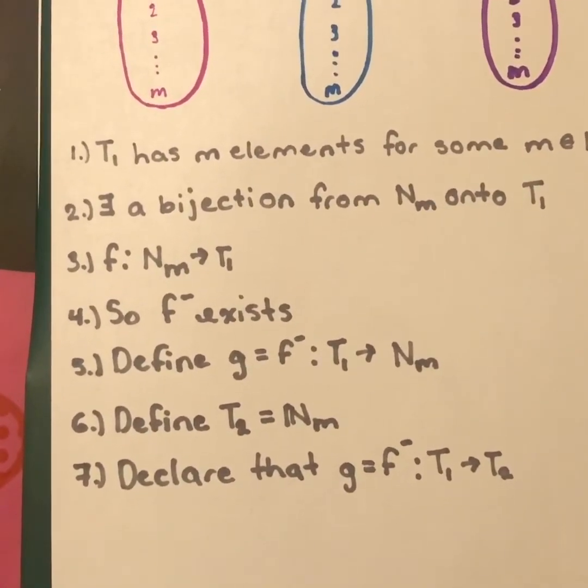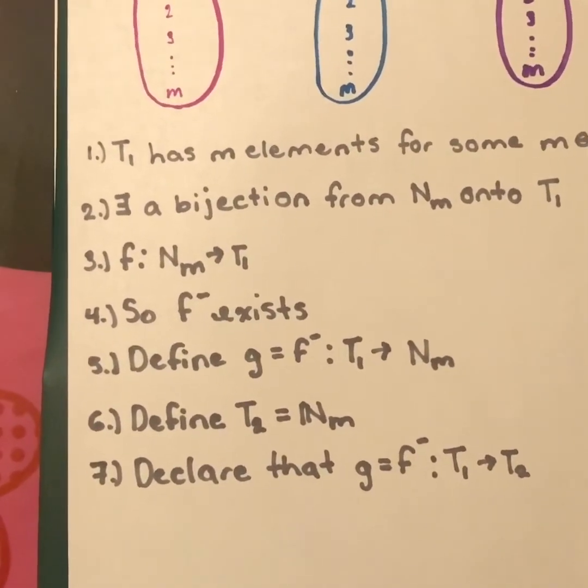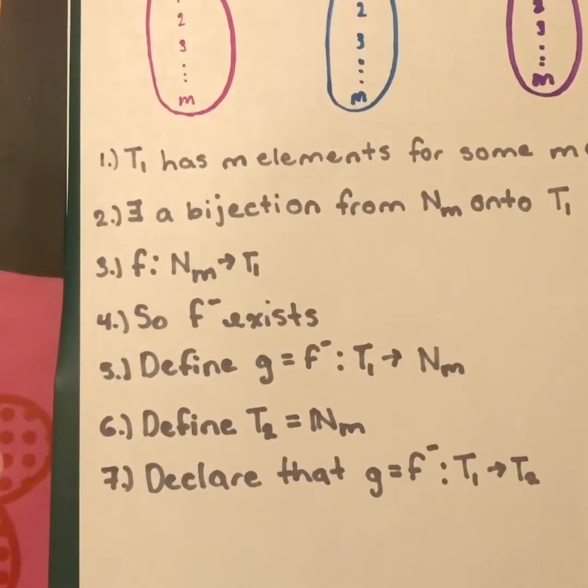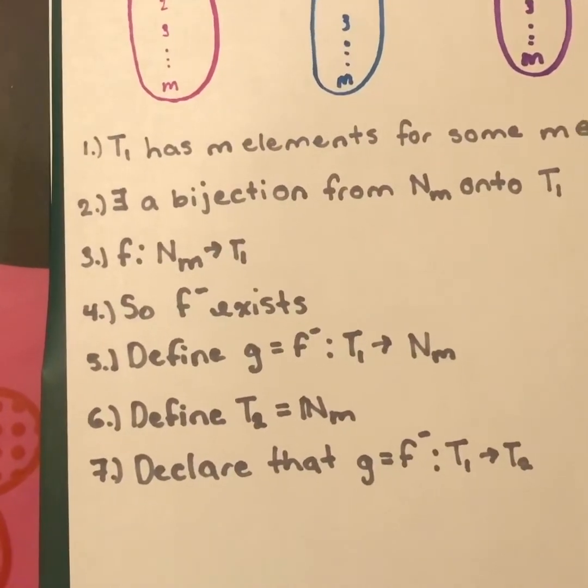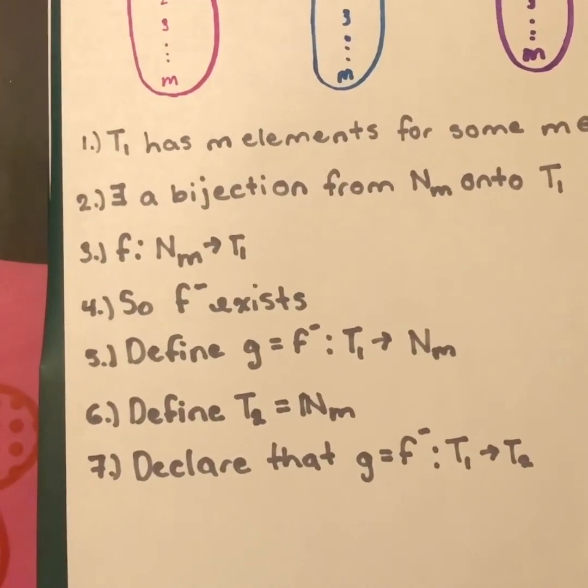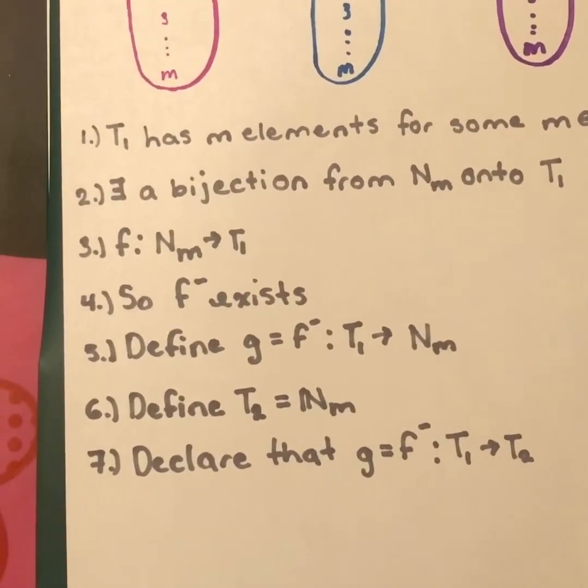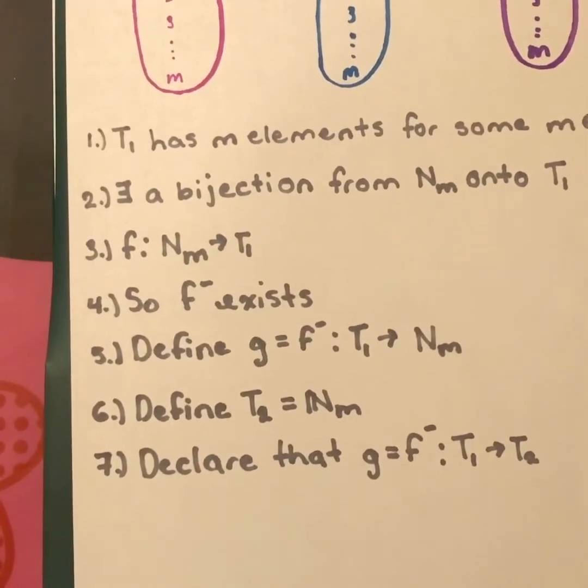However, f is a bijection, so we know that f inverse exists, and that is a theorem that you should be able to find in your book. Hence, we can define g as equal to f inverse that goes from the set T1 onto the set of the natural numbers sub m, where g is also a bijection.